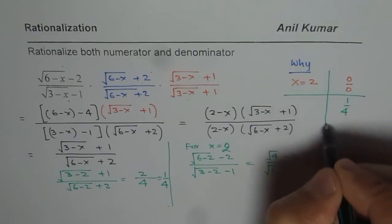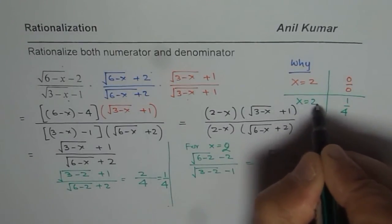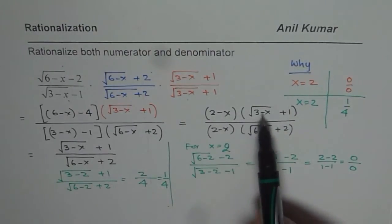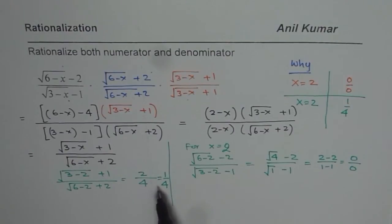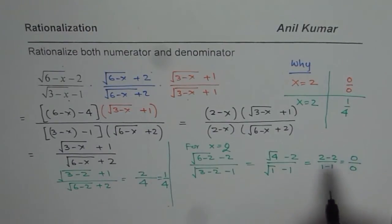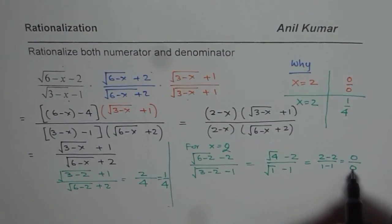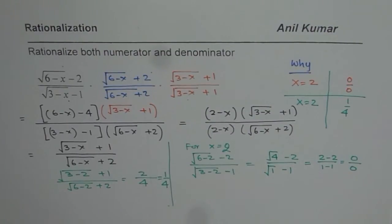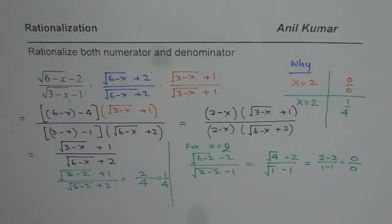For the same value of x equals 2, the original expression gives 0 over 0, which is undefined and meaningless. But the rationalized expression gives 1 over 4, which has meaning. That's the beauty we are going to explore when we discuss limits of radical functions. Thank you and all the best.